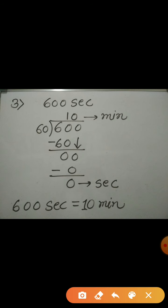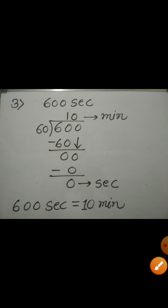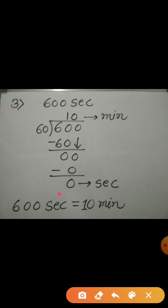Here, the quotient is 10 which we consider as a number of minutes. Remainder is 0 which we consider as a number of seconds. As number of seconds are 0, we skip to write it. So, we can simply write it down. 600 seconds is same as 10 minutes.